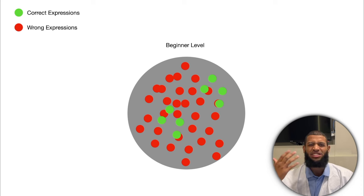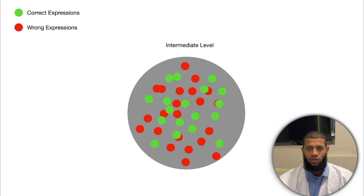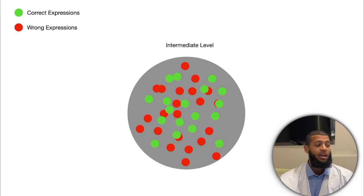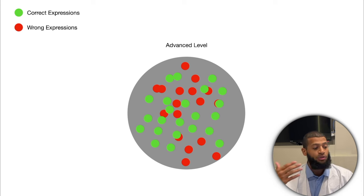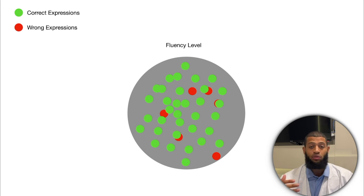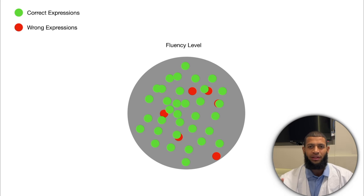Little by little you start fixing all those wrong expressions until you get to intermediate level, where you have a good balance of correct and incorrect expressions. Then you keep on doing this long enough until you get to advanced level, and eventually to fluency level, where you've fixed all the wrong expressions and pretty much everything you say is correct. You just keep repeating the cycle until you fix all your mistakes.